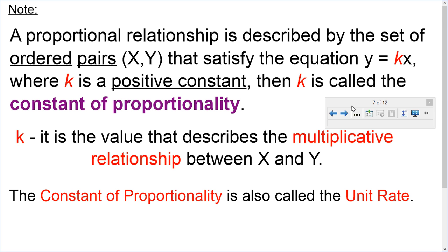We remember the unit rate. We talked about that some time ago in another video, where the unit rate is the rate of one item. So the price of one item is what we're talking about, one unit. So the constant of proportionality and unit rate are the same.